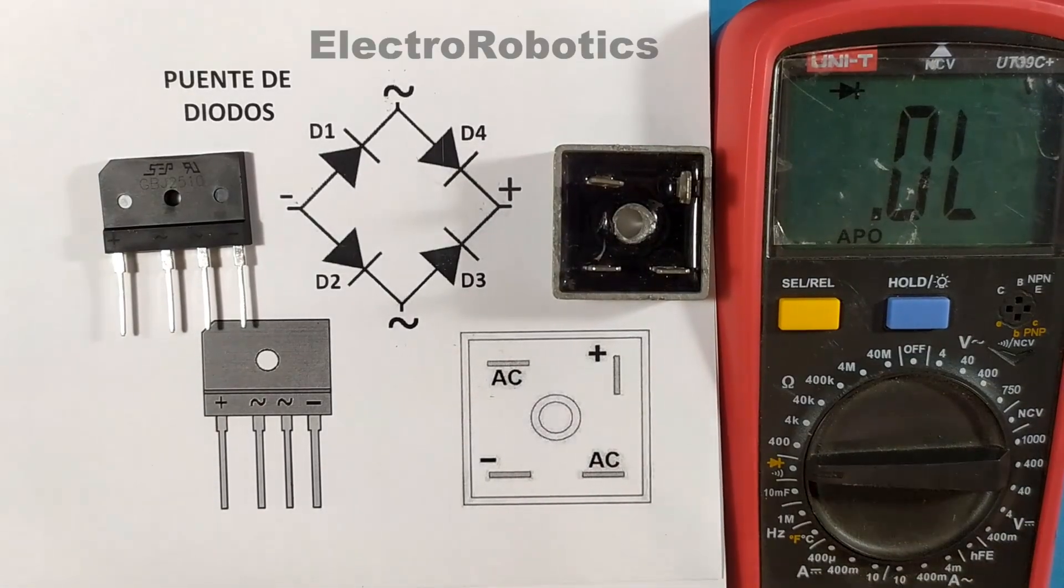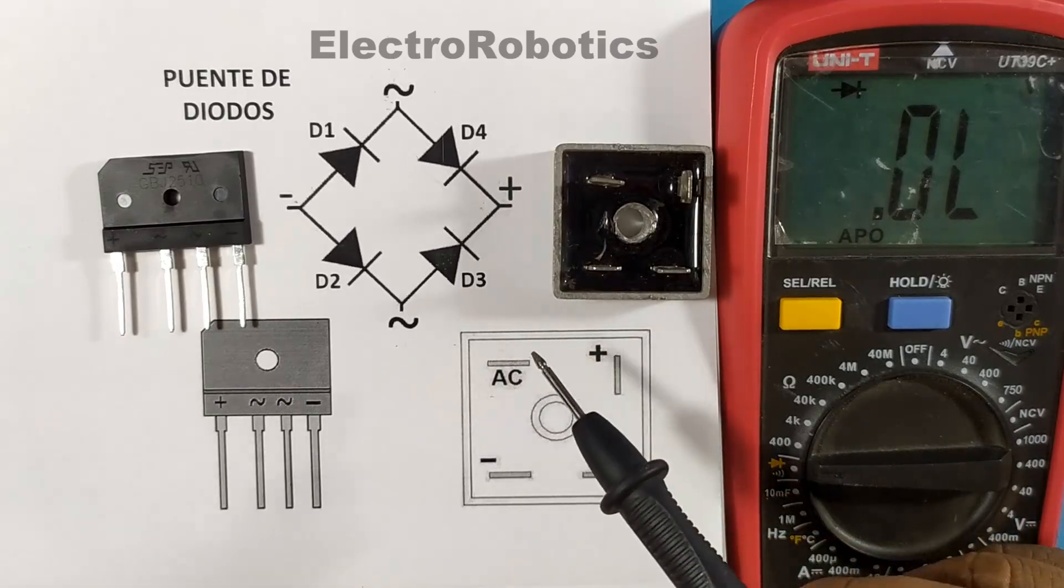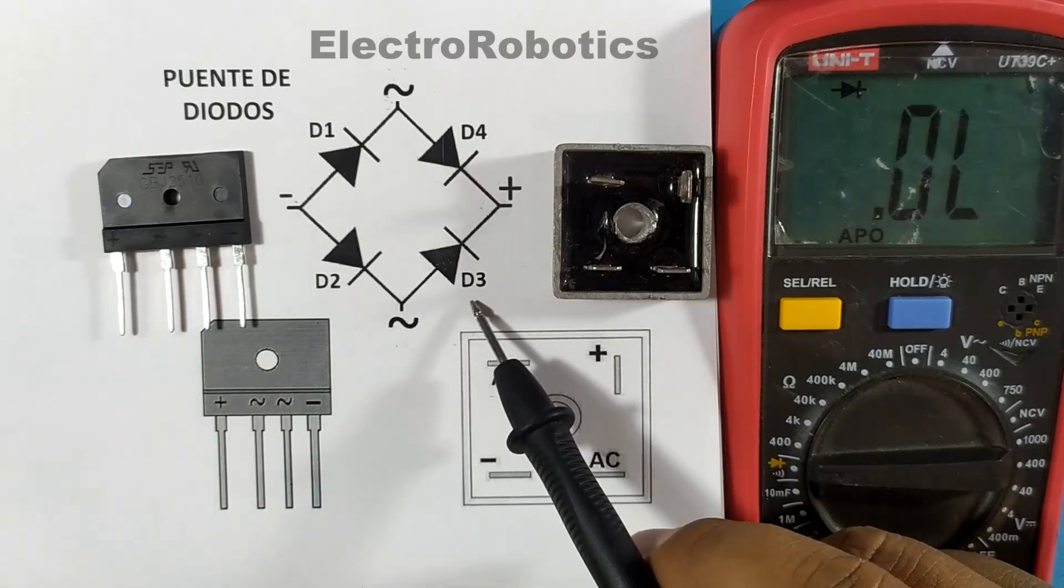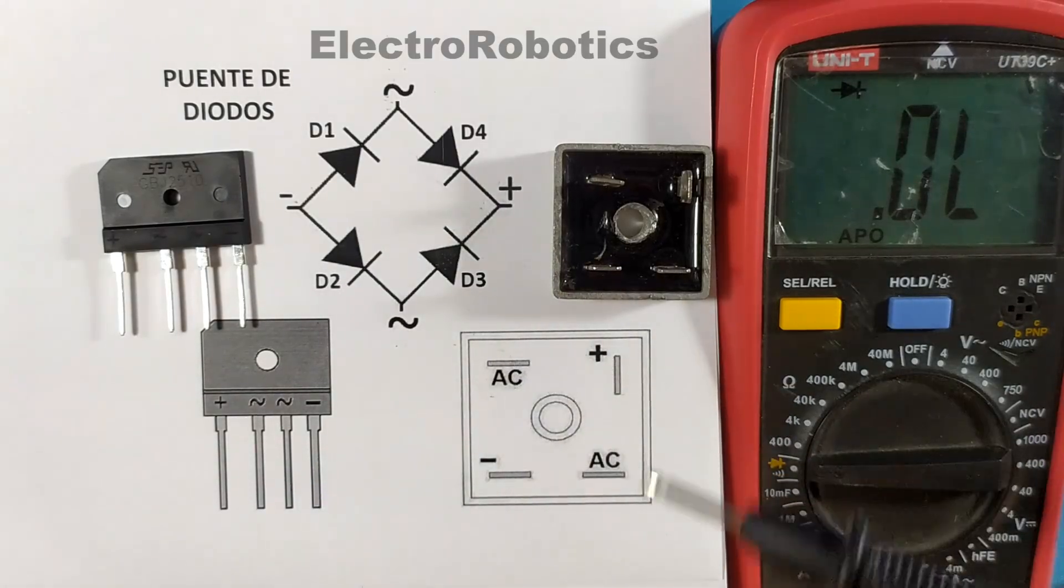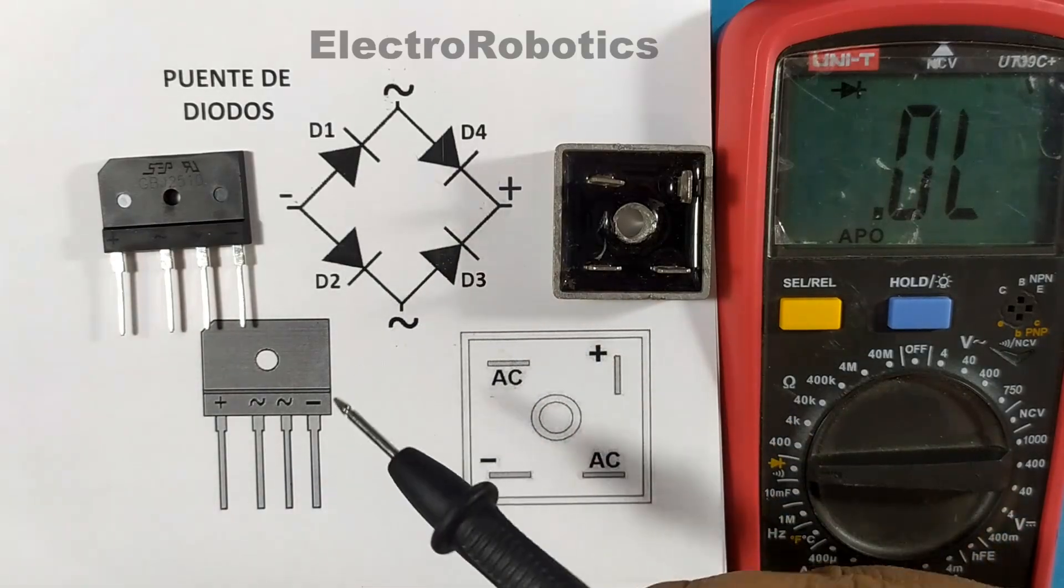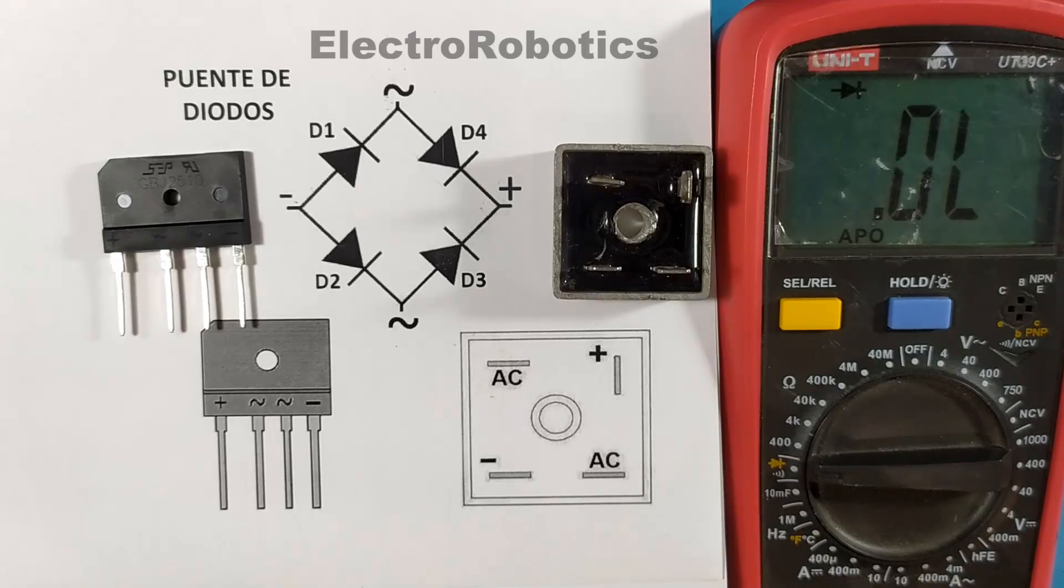The first thing is that you have to take into account how a diode bridge is assembled. In this case it has 4 diodes which allow the alternating current to be rectified into direct current. Therefore, it is enough for one of these diodes to be damaged to discard the diode bridge and replace it with a new one.